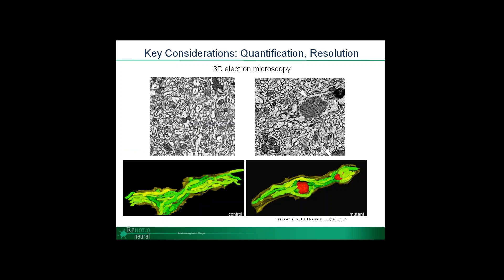Despite the power of IHC, there are some questions that require higher resolution to answer questions around axon health. A technology we use at Renovo for these high-resolution questions is 3D electron microscopy. This technique gives us the resolution of EM with the capacity to reconstruct individual cells or axons, where we can get precise measurements on parameters such as mitochondrial volumes, axon health, and synaptic load.